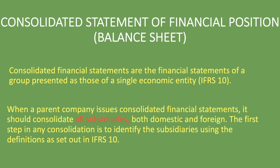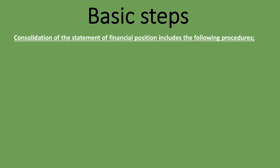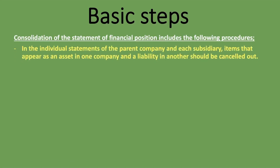So what are the steps that we take in consolidating the statement of financial position? We're going to go through an example right now, but let's first see what steps we're going to take. The consolidation of the statement of financial position includes the following procedures. In the individual statements of the parent company and each subsidiary, items that appear as an asset in one company and a liability in another should be cancelled out. That is a very important basic step that you will learn on your first encounter with consolidation.